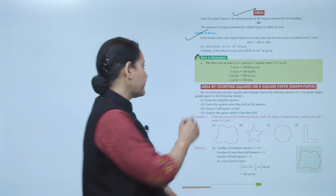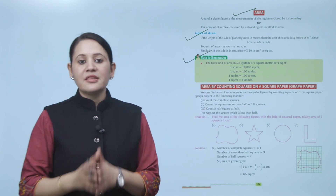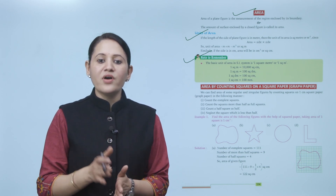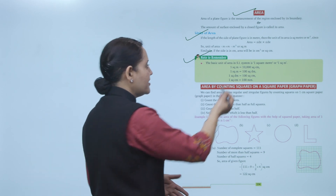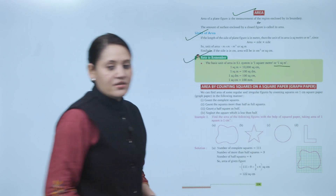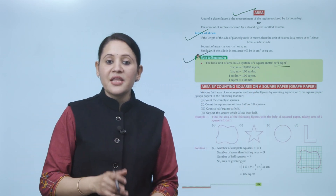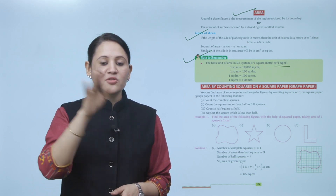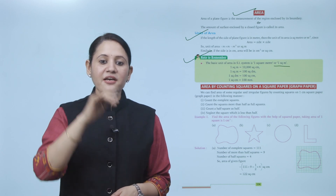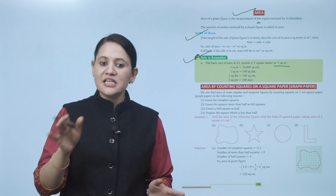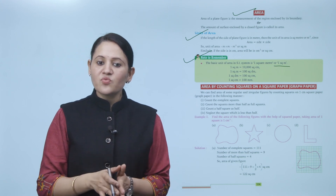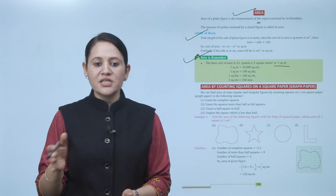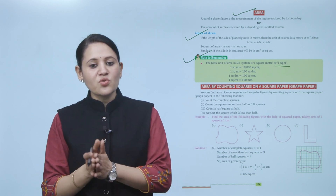Next is a note to remember. The basic unit of area in the SI system is one square meter. One square meter equals ten thousand square centimeters, since 100 times 100 equals ten thousand. One square meter equals one hundred square decimeters. One square decimeter equals one hundred square centimeters. One square centimeter equals one hundred square millimeters.